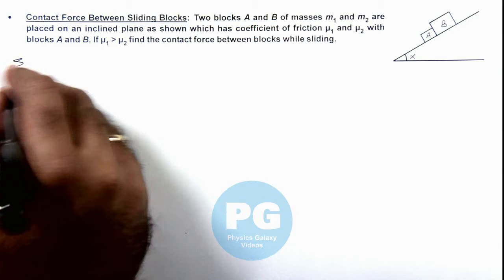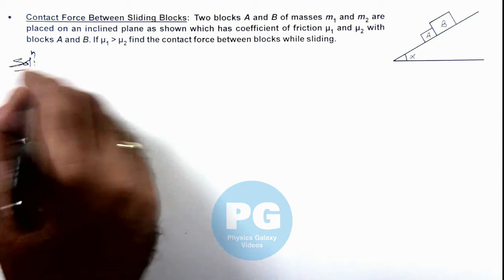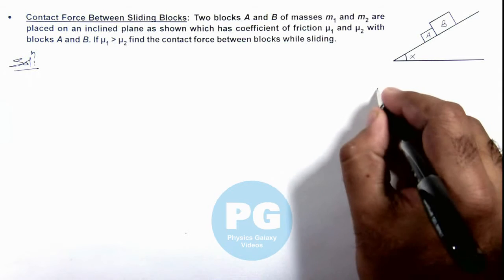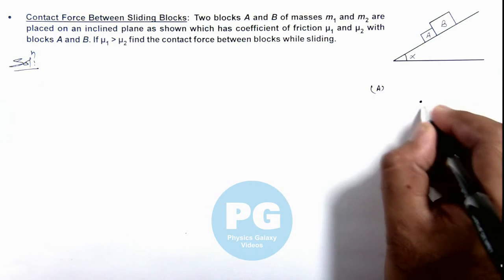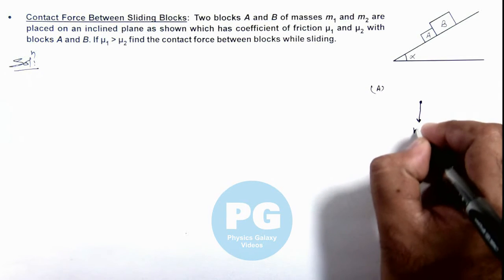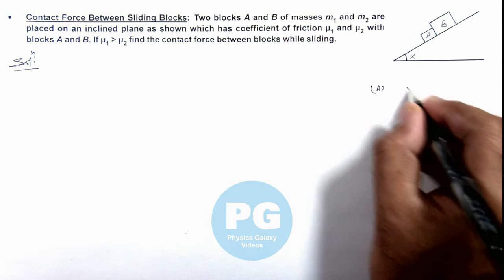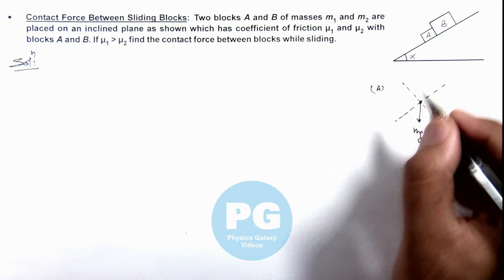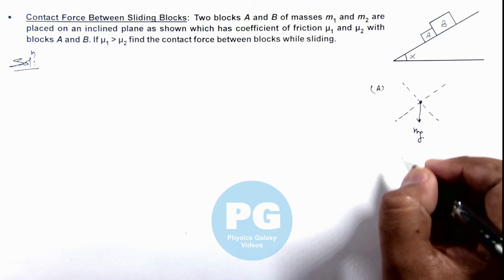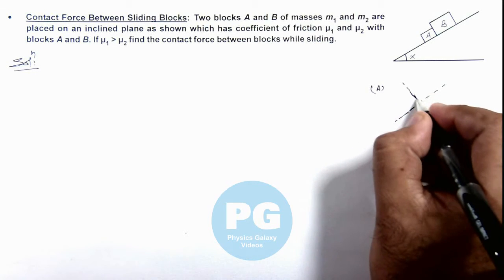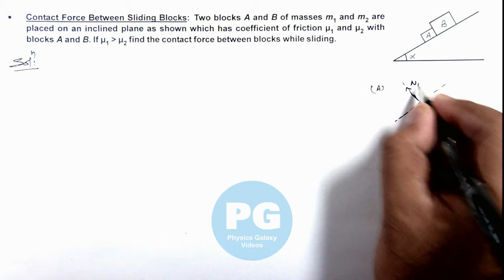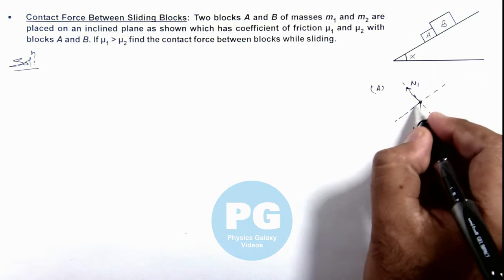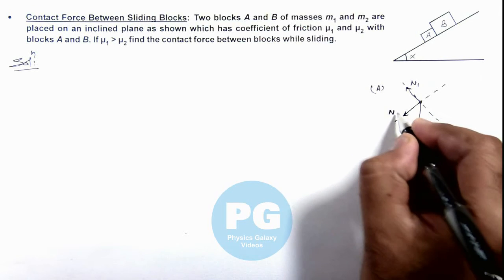Now in this situation, if we draw the free body diagram of the 2 blocks, for block A it is experiencing its weight mg in the downward direction. Drawing reference lines along and normal to the incline, one normal reaction N1 will act on block A from the inclined surface, and one normal reaction N2 is due to block B acting on block A.